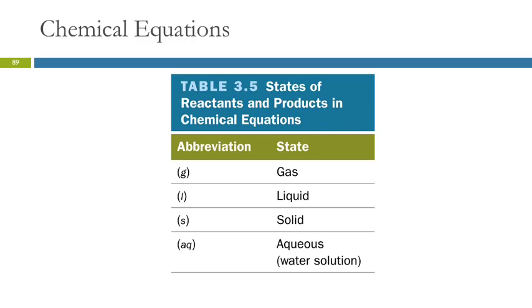We have symbols that we use to indicate the states of reactants and products. They're pretty easy to understand. G for gas, L for liquid, S for solid. Aq stands for aqueous. That means it's dissolved in water. It's a homogeneous solution of whatever that substance is in water.